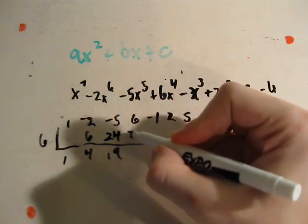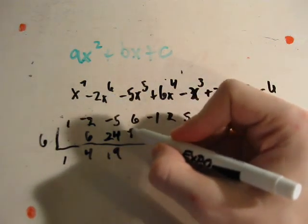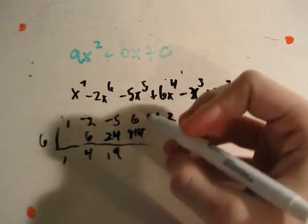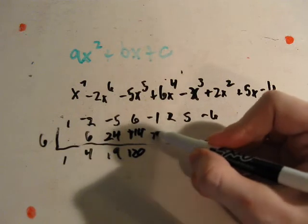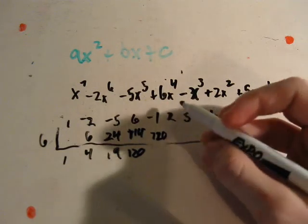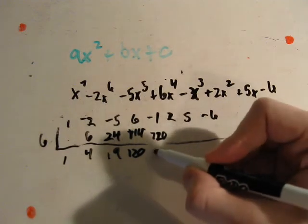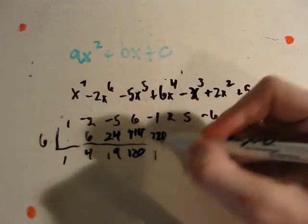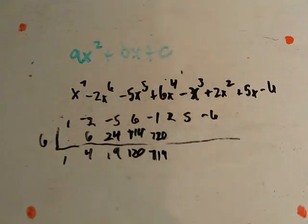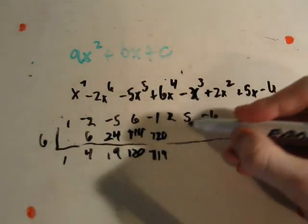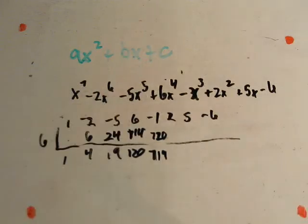Then six times nineteen is equal to one hundred and fourteen. Then hundred and twenty, six times one hundred and twenty is seven twenty, minus one, that's seven nineteen, times six, that's, well, you get the picture.